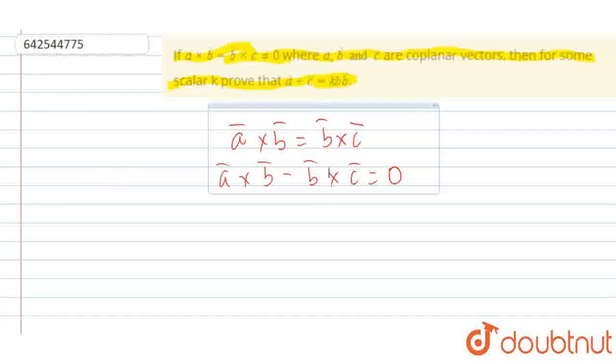Now, here we would use one property. The property is a cross b vector is equal to minus b cross a vector. This is a basic property of vectors.